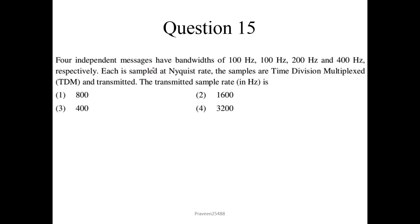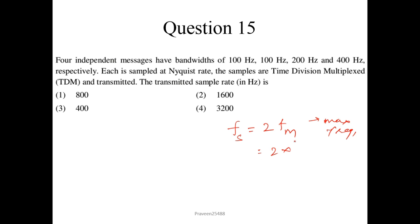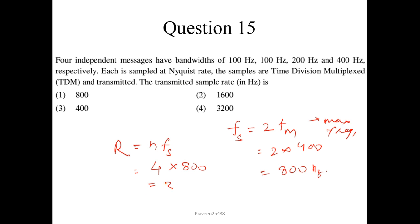Question number 15. Four independent messages have bandwidths of 100 Hz, 100 Hz, 200 Hz, and 400 Hz, sampled at the Nyquist rate and time-division multiplexed. The maximum frequency is 400 Hz, so the sampling frequency fs = 2 × 400 = 800 Hz. The total sampling rate R = n × fs = 4 × 800 = 3200 samples/sec. Option 4, 3200, is the correct answer.